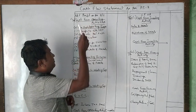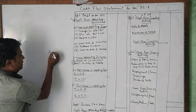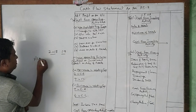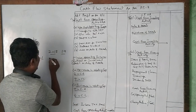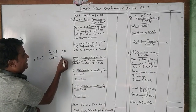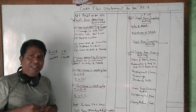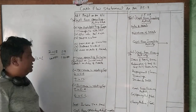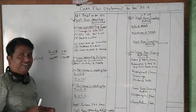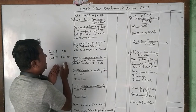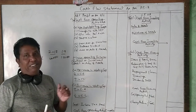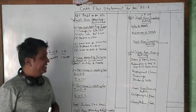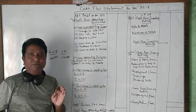For cash from operating activity, we take the net profit as per the balance sheet. For example, if the profit and loss account shows 1 lakh rupees in 2018 and 1 lakh 50,000 rupees in 2019, then during the year we earned 50,000 rupees net profit. That net profit figure, which you find in the balance sheet given in the question, is the first item to take in the statement.